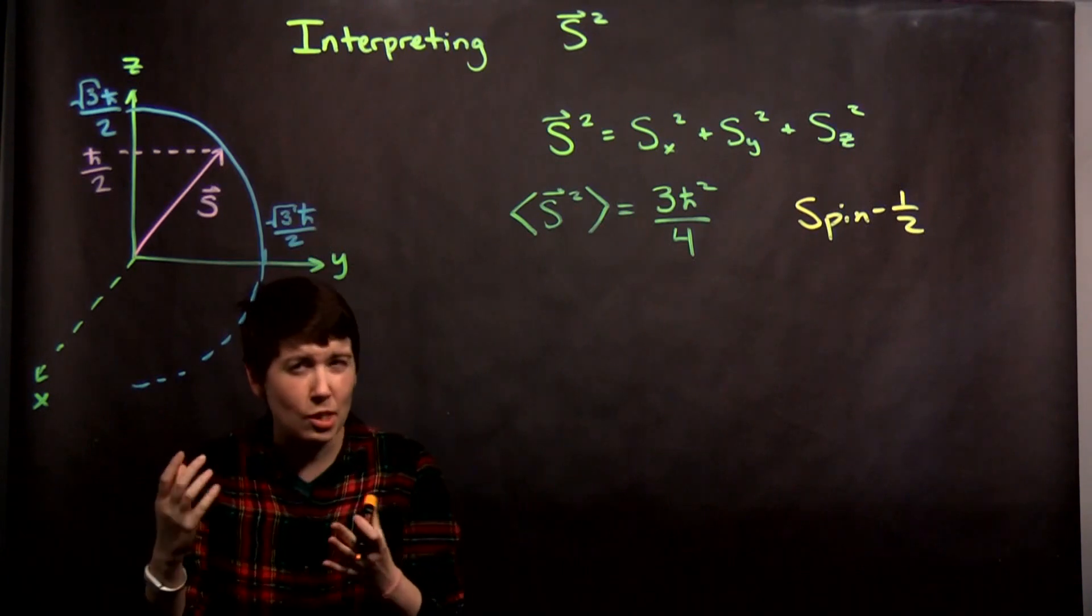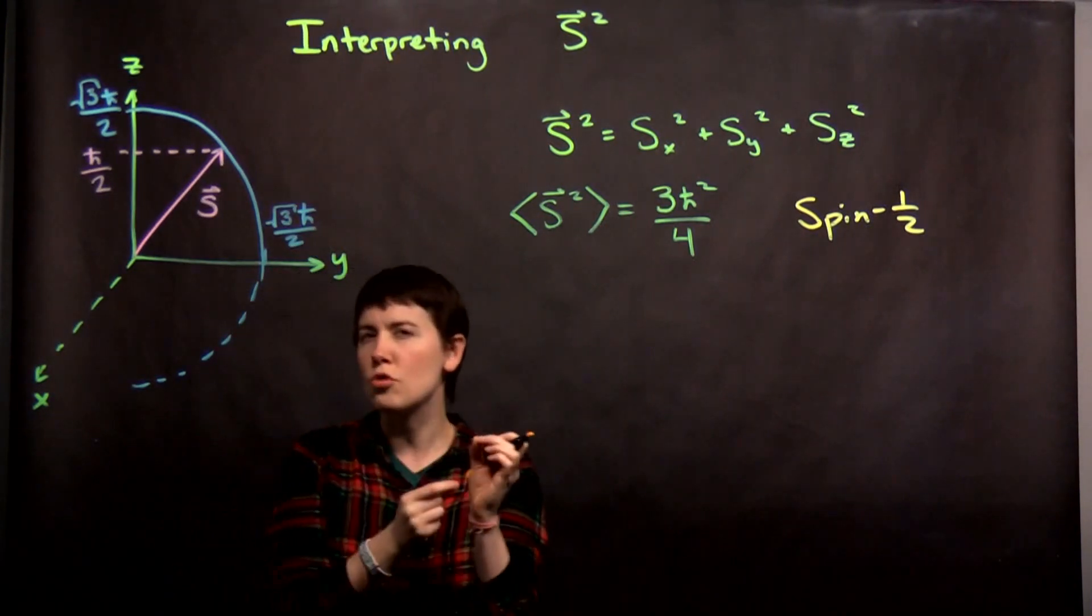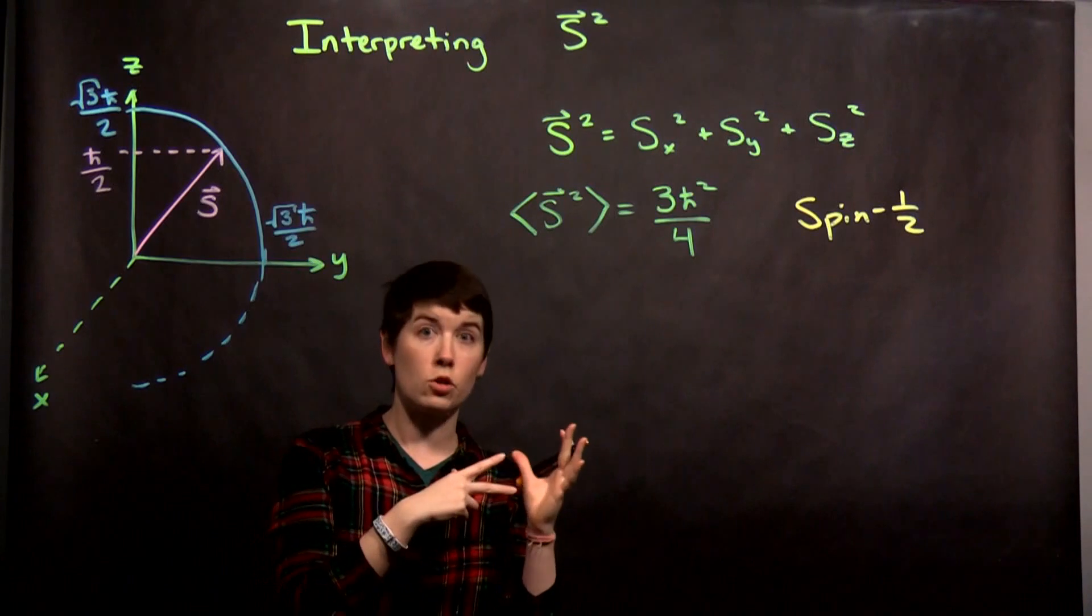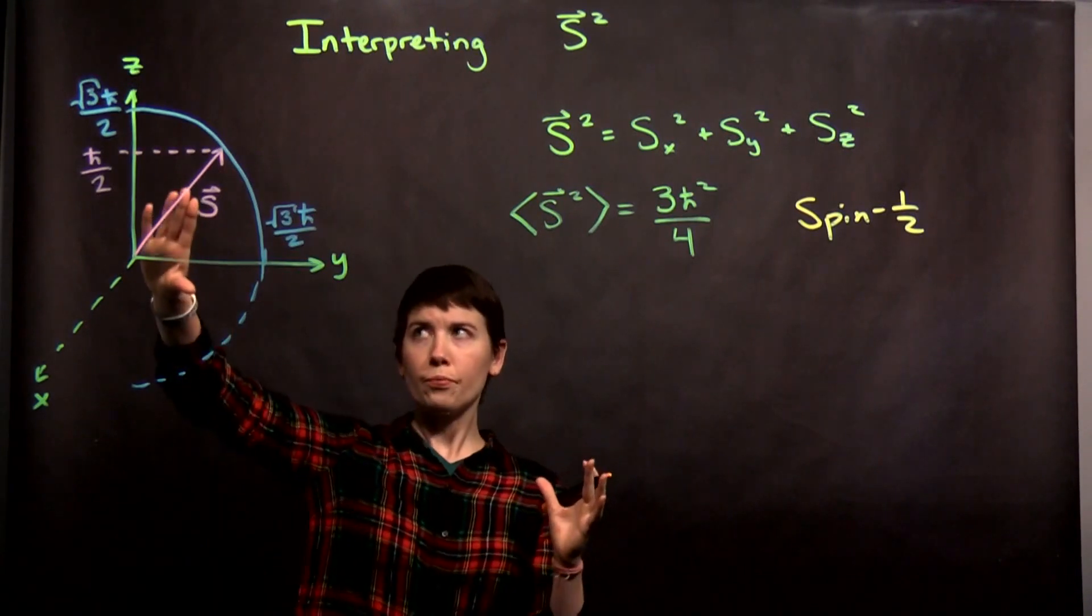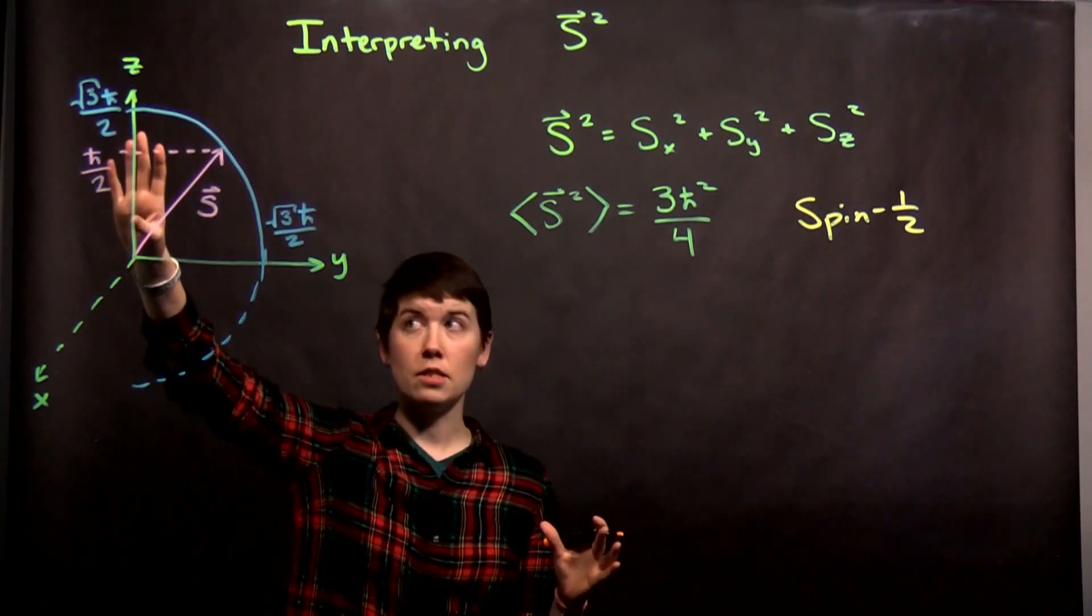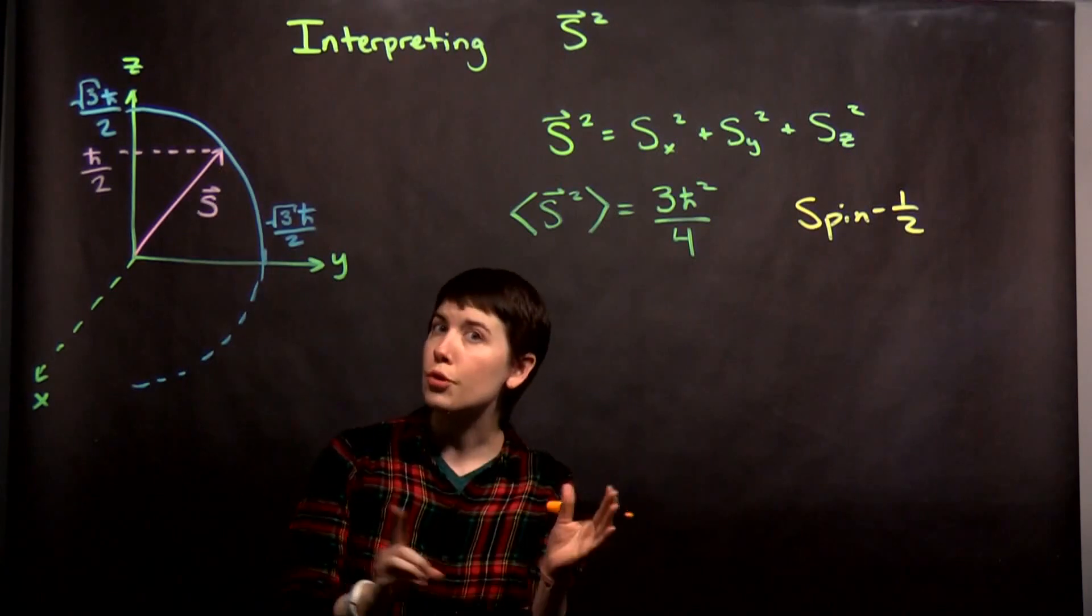So again, this is kind of an uncertainty principle that has to do with the relationship between each of the three directions. So we do know what the z-component is and what this is. Those do commute.